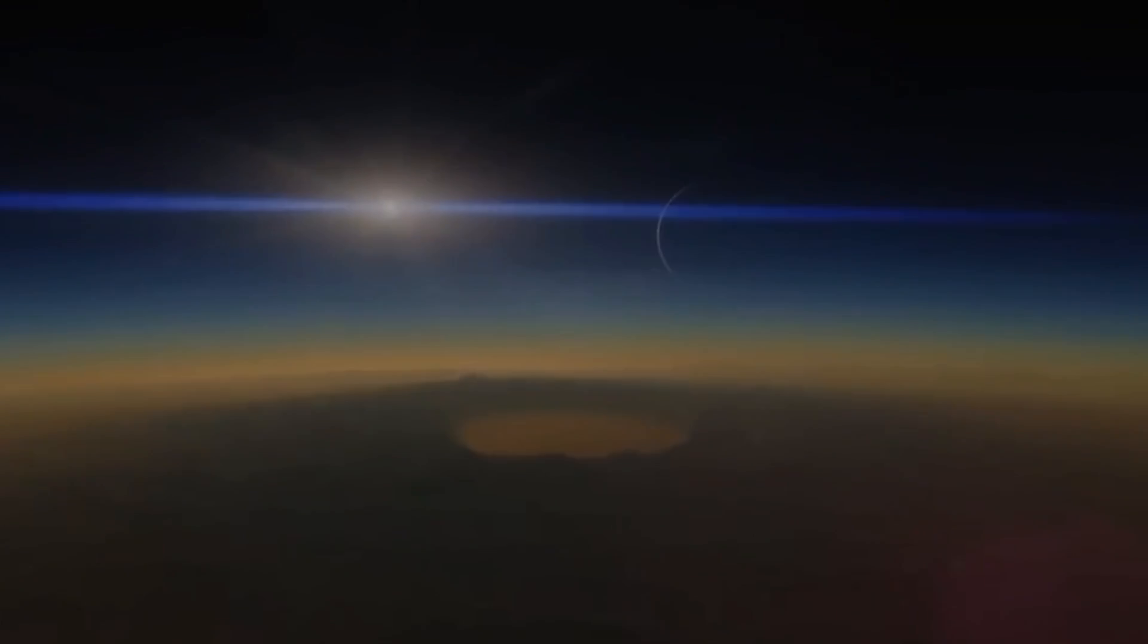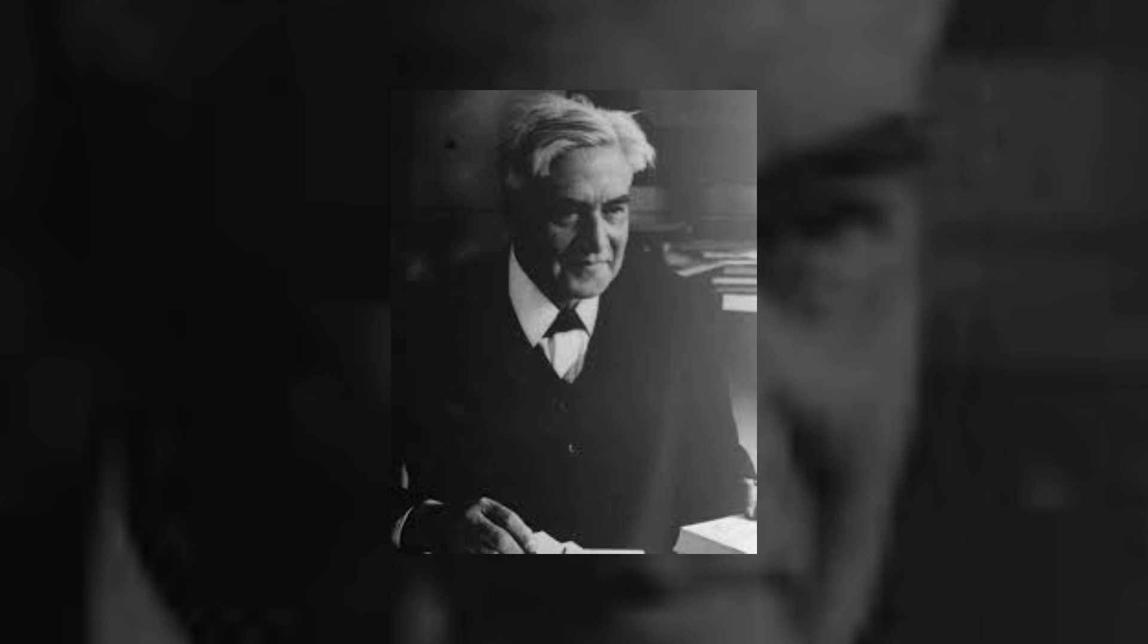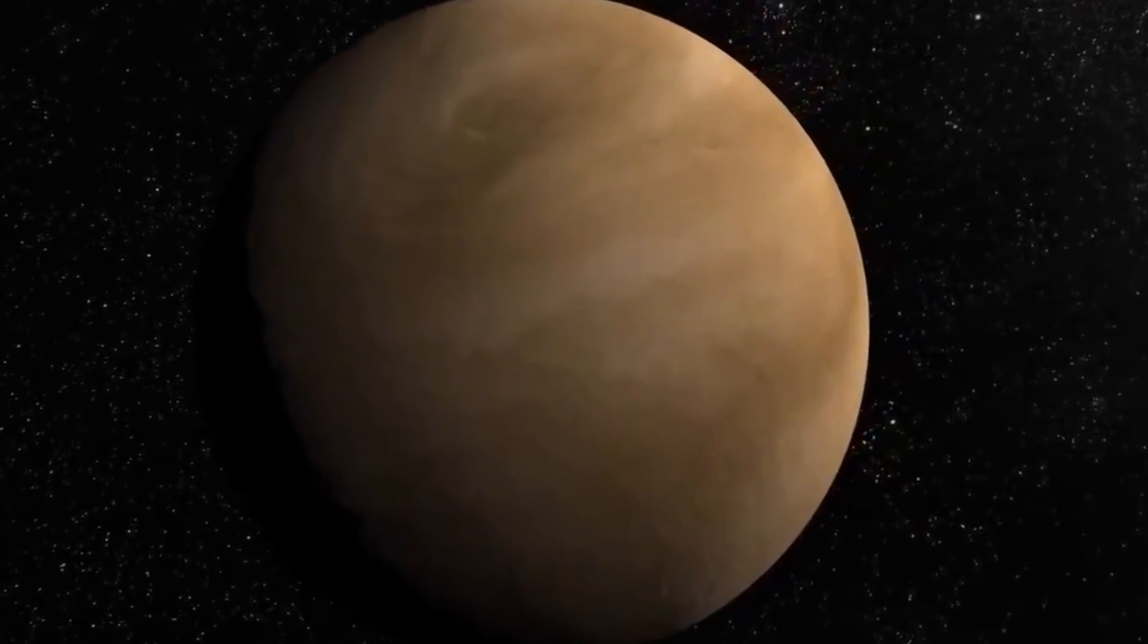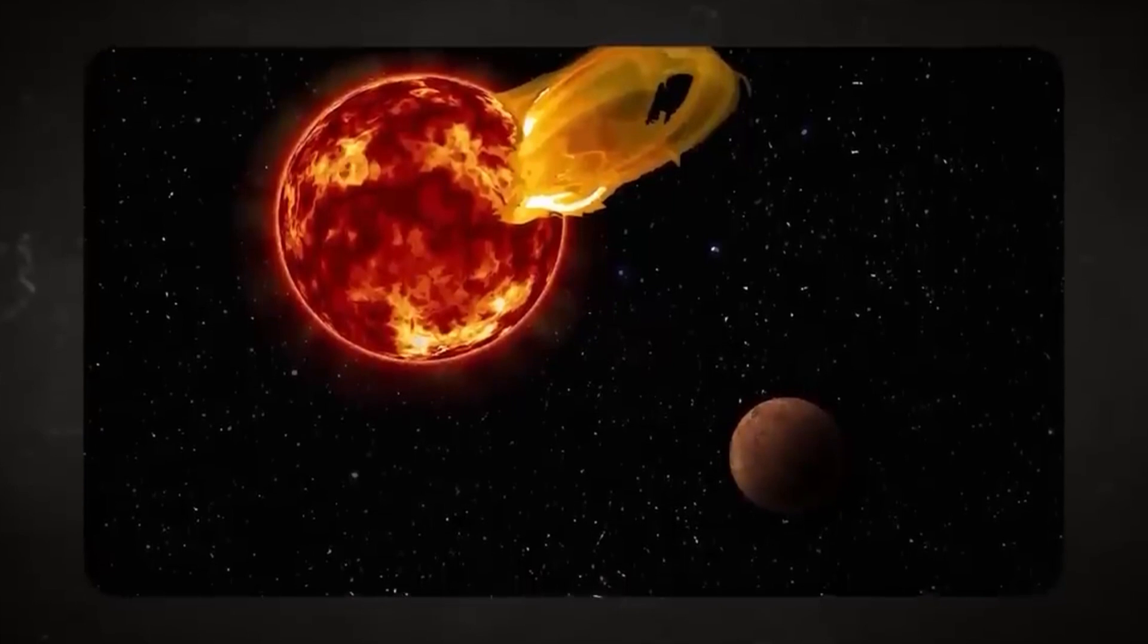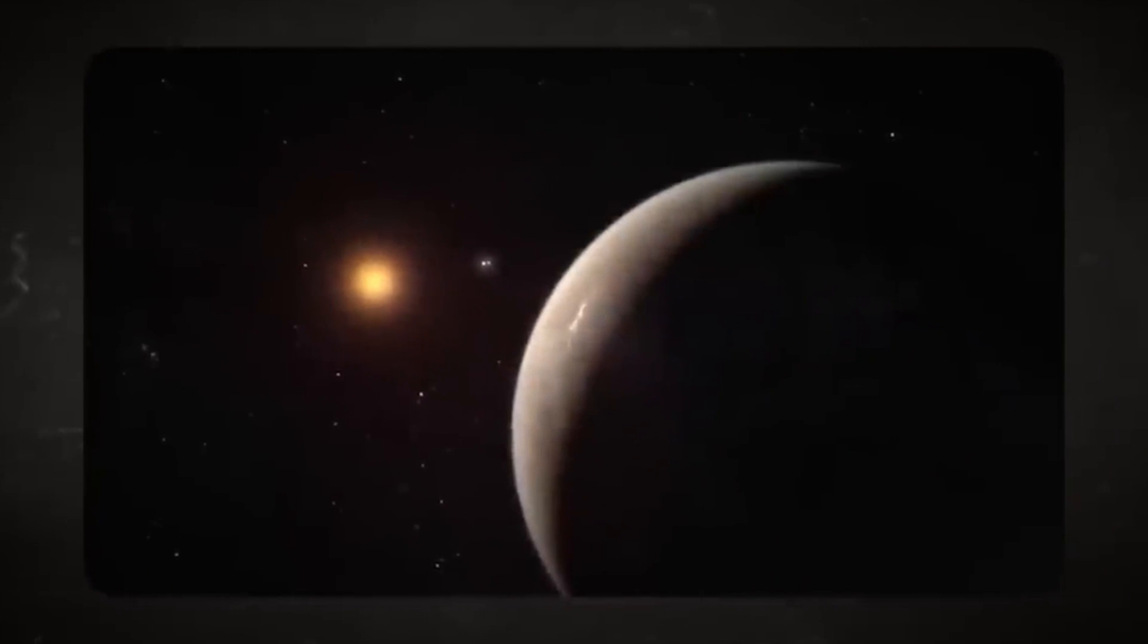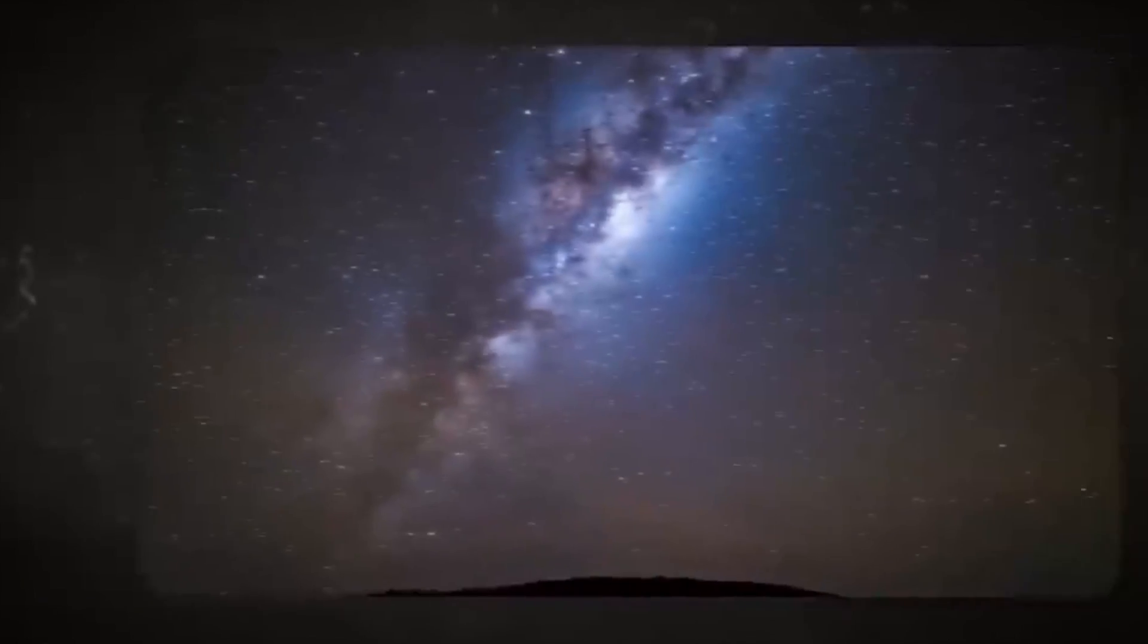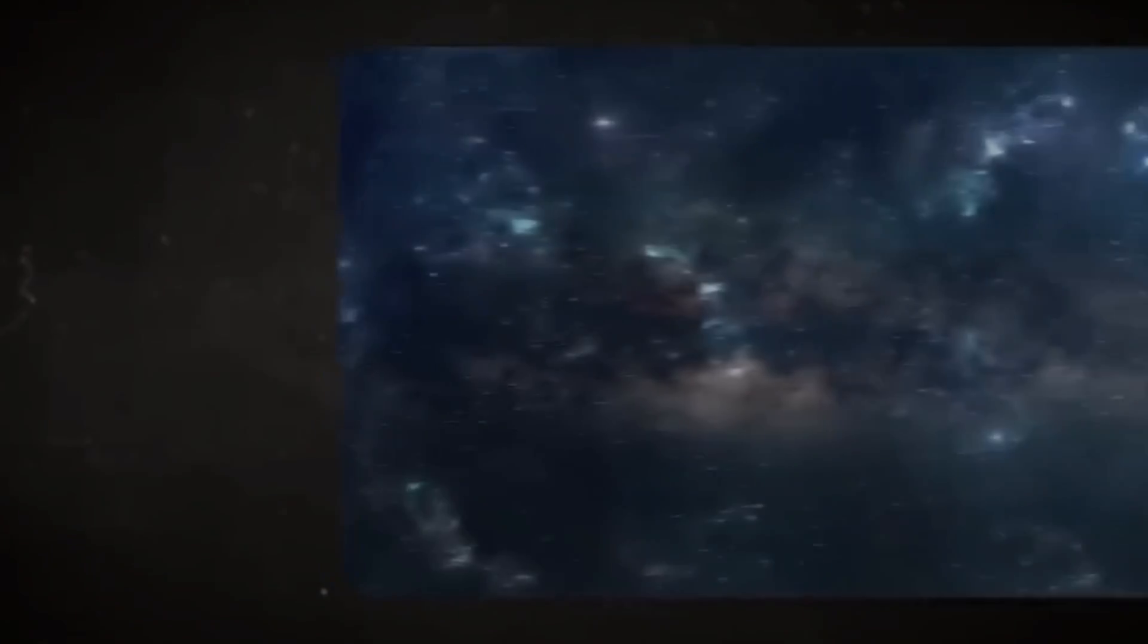Back in 1915, Scottish astronomer Robert Thorburn Ayton Innes unveiled this celestial gem to the world. Despite its proximity, Proxima Centauri remains elusive to the naked eye, boasting an apparent magnitude of 11.13, far surpassing the human eye's visibility limit at 6.5.